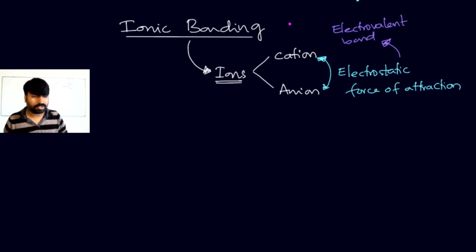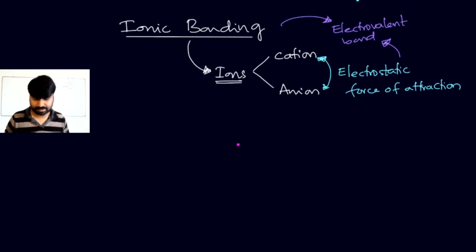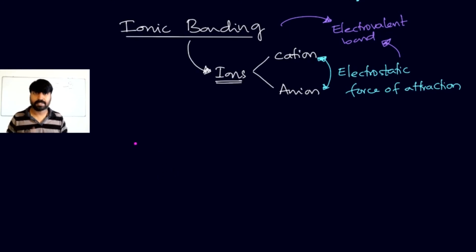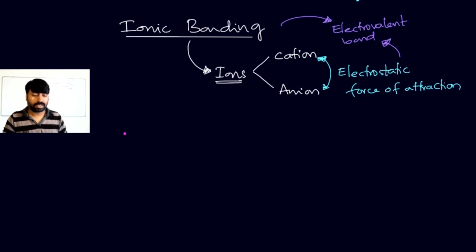The ionic bond can also be referred to as an electrovalent bond because an electrostatic force of attraction exists within it. Now let's understand how the octet rule and ionic bonding are correlated. Let's take the example of sodium.